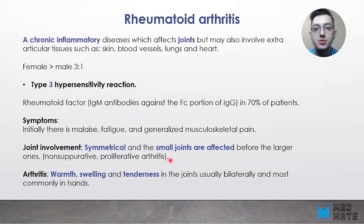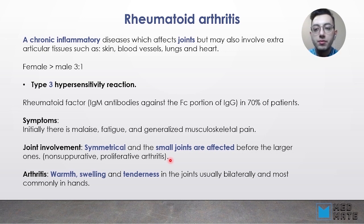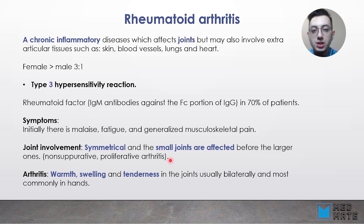The next autoimmune disorder is rheumatoid arthritis, which is a chronic inflammatory disease affecting joints but may also involve extra-articular tissues. One key finding is the rheumatoid factor: IgM antibodies against the Fc portion of IgG, found in 70% of patients.